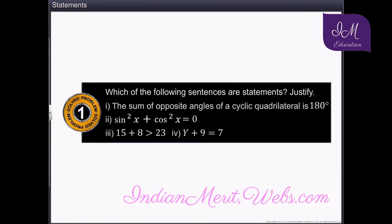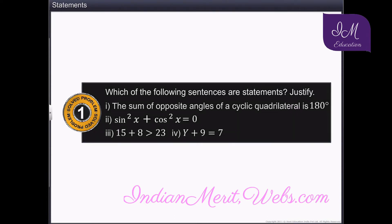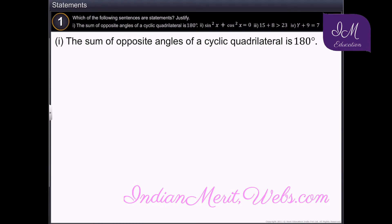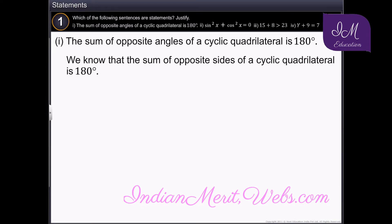Which of the following sentences are statements? Justify. Let's begin with the sentence: the sum of opposite angles of a cyclic quadrilateral is 180 degrees. We know that this is true. Hence, the sentence is true. Therefore, it is a statement.